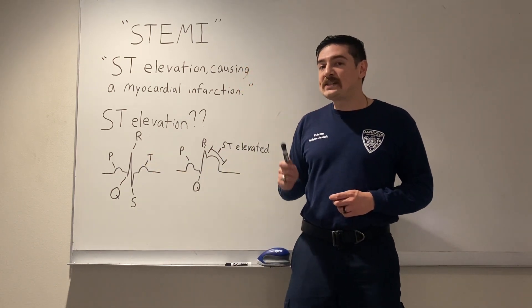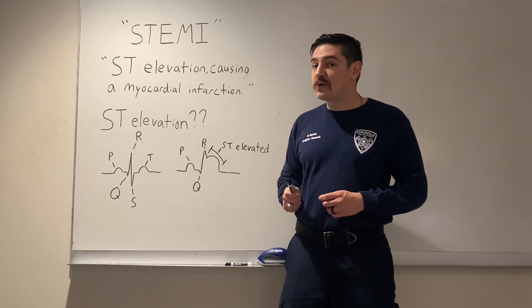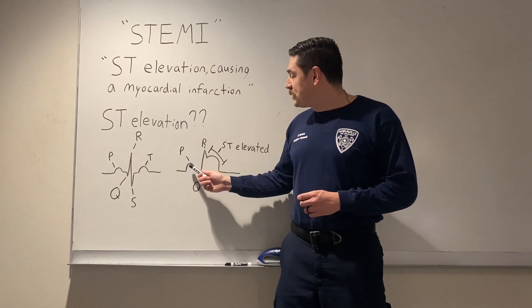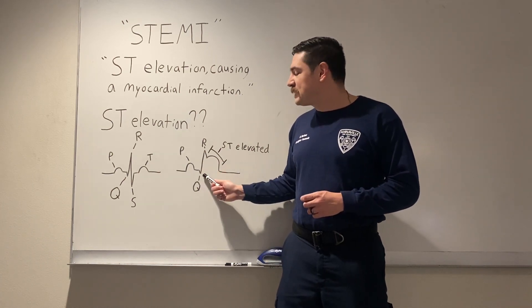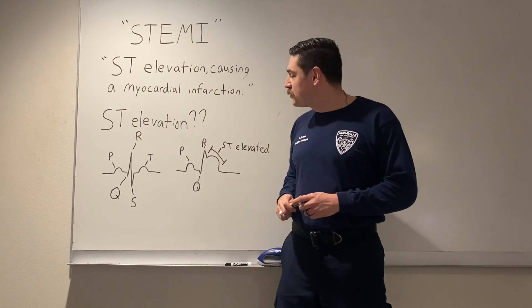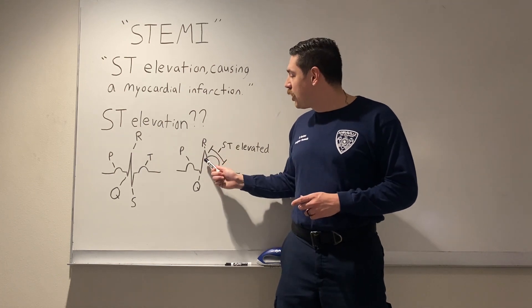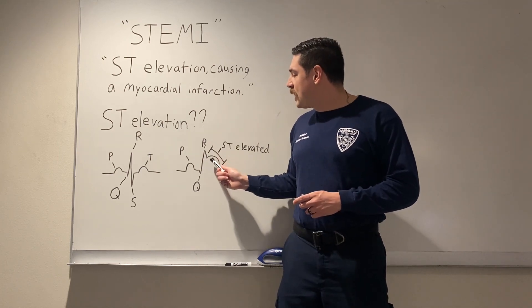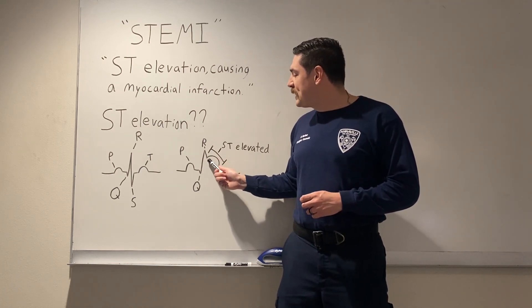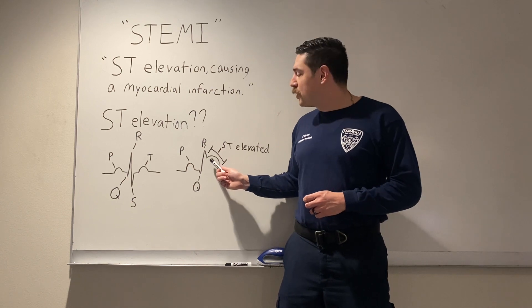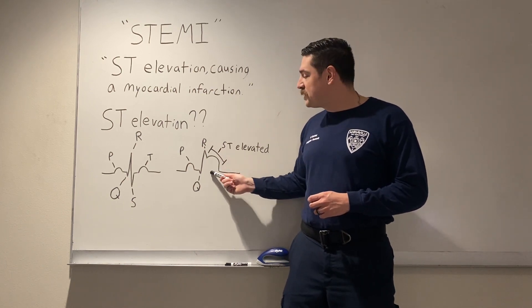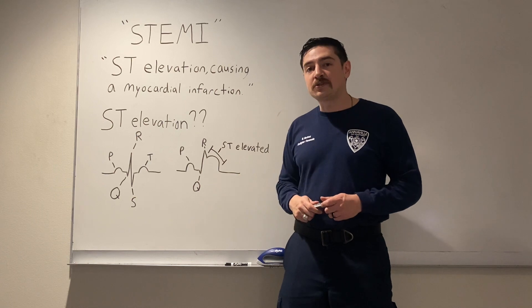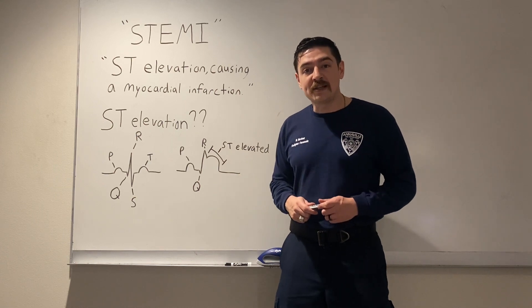For a patient who has ST elevation, or a possible heart attack, we can see that we have the P wave, sometimes a Q wave may or may not be present, the R wave, and we can see that the S and the T have merged together and are appearing elevated, such as the one being displayed here. This is ST elevation.